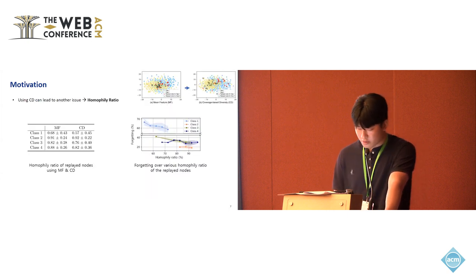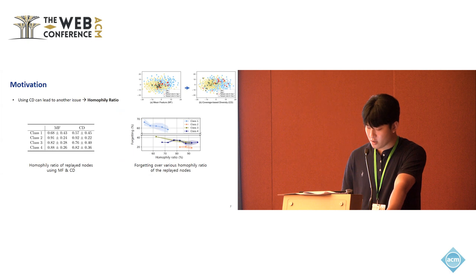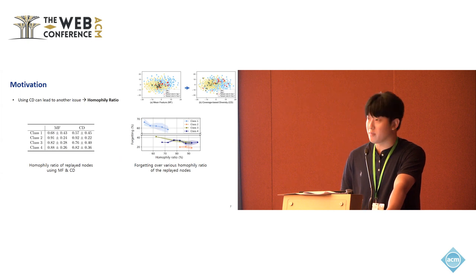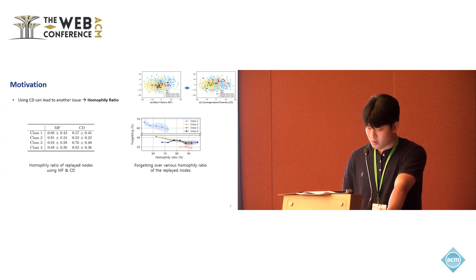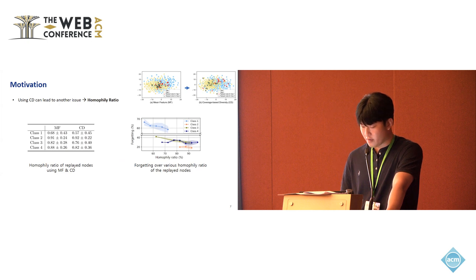However, in the process of selecting the buffer to increase diversity, it is inevitable that nodes with low homophily ratio near the decision boundary will also be selected. Therefore, as shown in the table on the left, when using our methodology CD, which considers diversity, it was observed that the homophily ratio of the replay buffer was low. We all know that it is hard to train the model on the nodes with low homophily ratio because of the inductive bias of GNN. The figure on the right illustrates forgetting with the average homophily ratio of the replay buffer for each class. Since higher homophily ratio tends to decrease forgetting, directly using the replay buffer selected by CD results in significant forgetting.